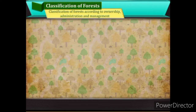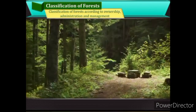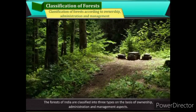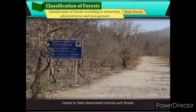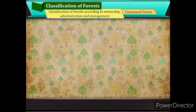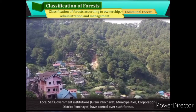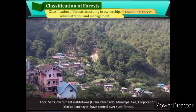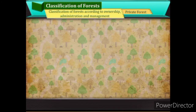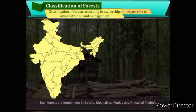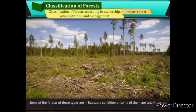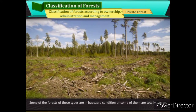Classification of forests according to ownership, administration and management divides forests of India into three types. State Forests are controlled by central or state government; most forests of the country fall under this category. Communal Forests are under local self-government institutions such as Gram Panchayat, municipalities, corporations, and district Panchayat. Private Forests are owned by individuals and are found more in Odisha, Meghalaya, Punjab and Himachal Pradesh. Some of these forests are in haphazard condition or totally barren.